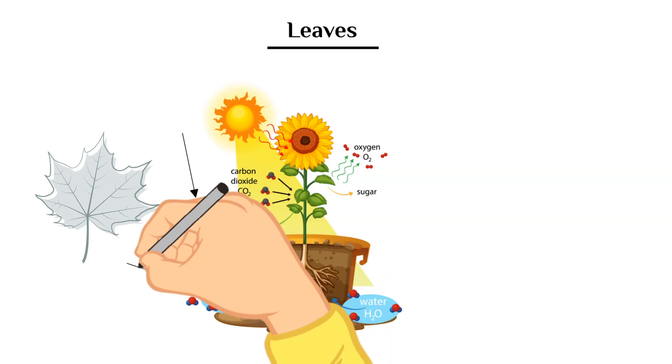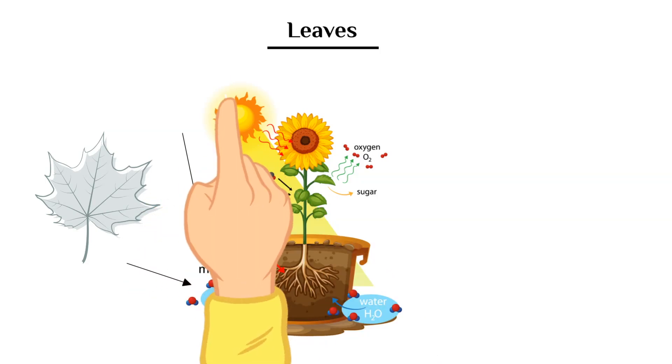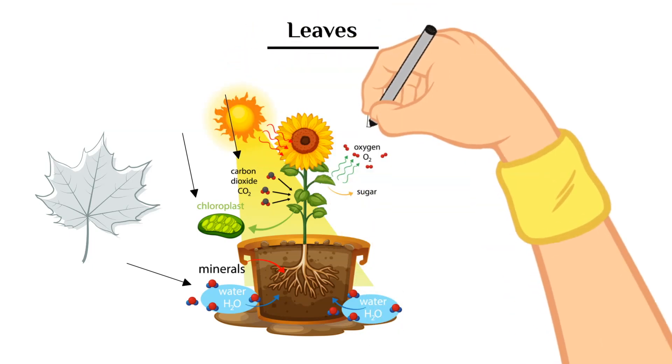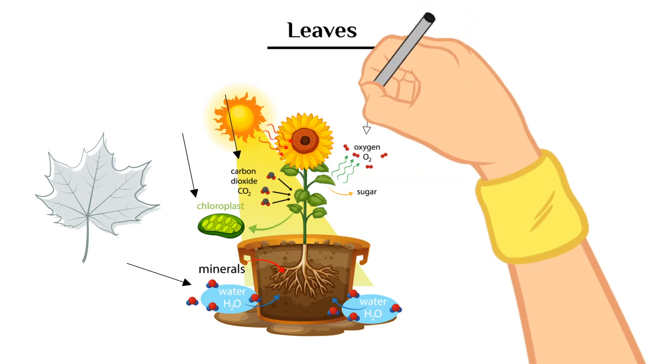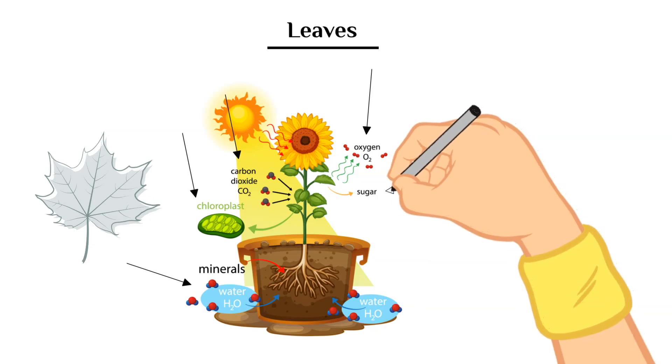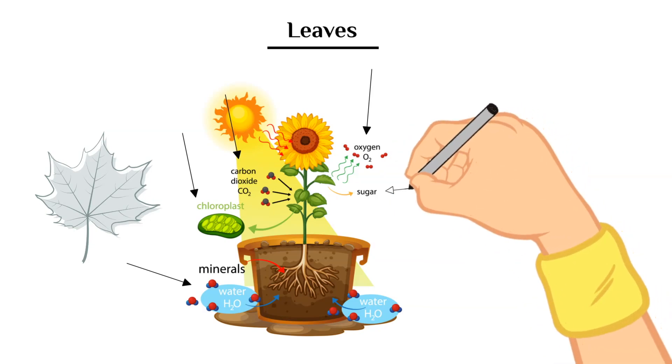So a plant will absorb sunlight, water, and carbon dioxide, and turn it into food and oxygen. This food that is created is specifically created in the form of sugar or glucose.